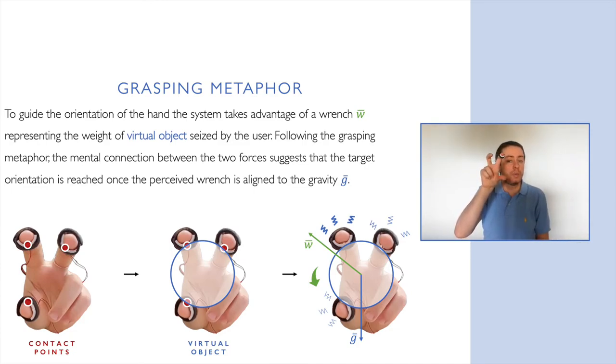As soon as the wrench is placed, mathematical computation based on the grasping theory is performed to generate the haptic cues. The thimbles vibrate in accordance with the wrench direction. Thus, the user has to align the perceived wrench along with the gravity.